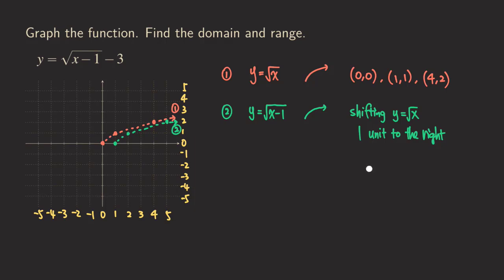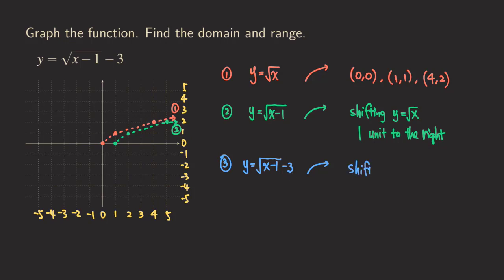And then, just one more transformation here — with a minus three on the outside. This is going to affect our y value, so we have a vertical transformation. So we are going to have y equals square root of x minus one, minus three. The second step was a horizontal transformation, moving the graph left and right. This one with a minus three is a vertical transformation — we're moving the graph up and down. So this is shifting y equals square root of x minus one three units down.